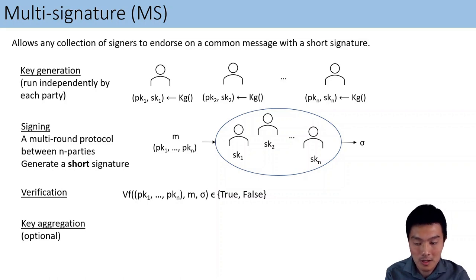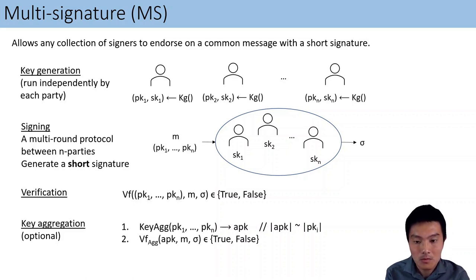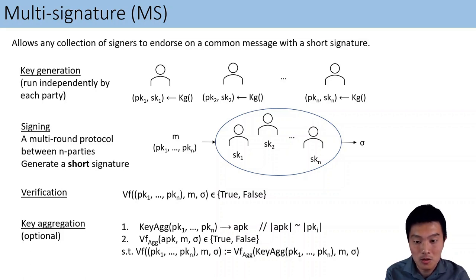Key aggregation is an optional feature for multisignature schemes. We say that a scheme supports key aggregation if there are two additional algorithms. First, key aggregation, which takes in a list of public keys to return one aggregated public key. We require that the aggregated public key be about the same length as a regular public key. Verification then takes an aggregated public key, a message, and a signature to return a boolean value. To replicate the same syntax as standard verification, we define a replication algorithm as simply the composition of key aggregation and verification.